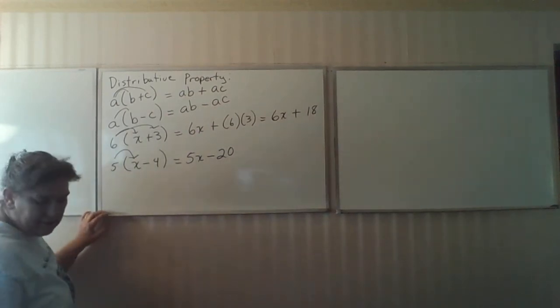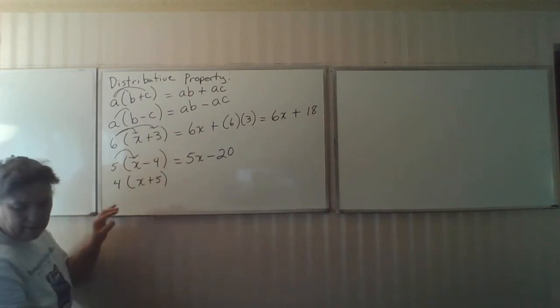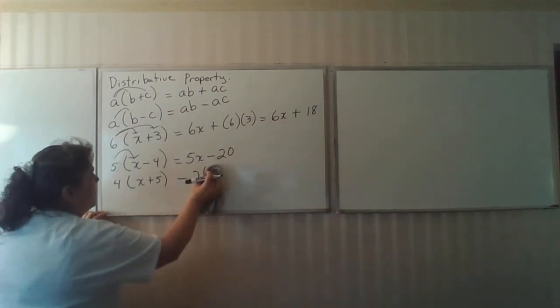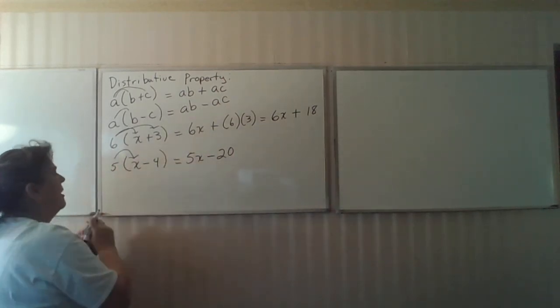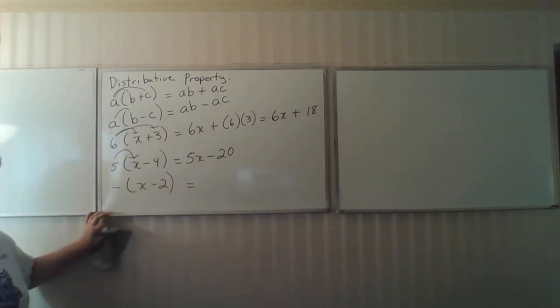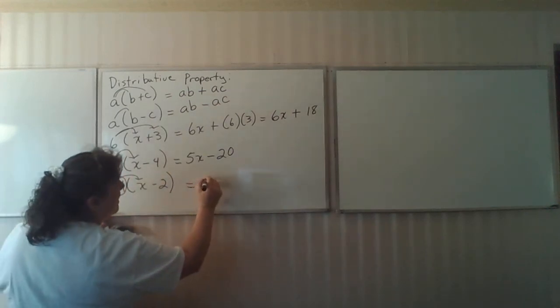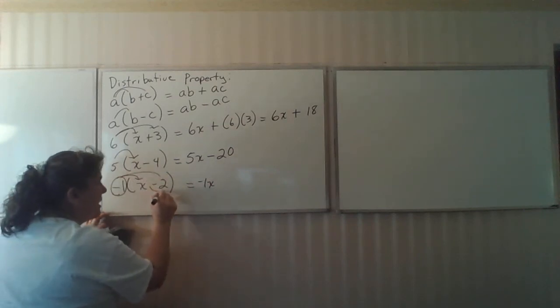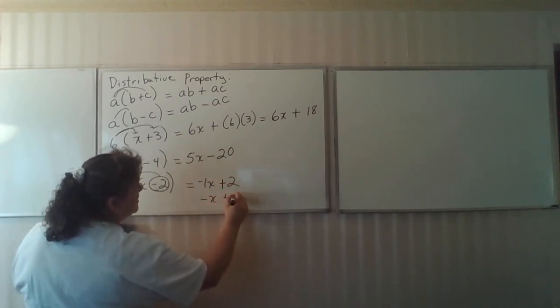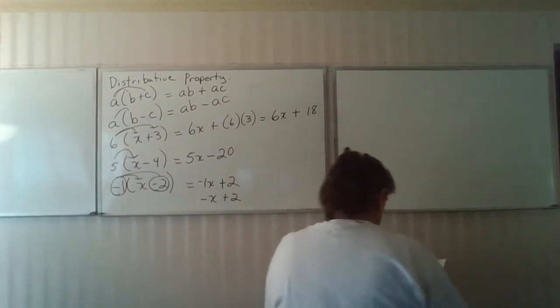Let's do one more. What's the negative of X minus 2? This negative is the same thing as saying a negative 1. Negative 1 times X equals negative 1X or negative X. Negative 1 times the negative 2 makes a positive 2. So this is negative X plus 2. The reason I wanted to do that is because the next one puts a negative in.